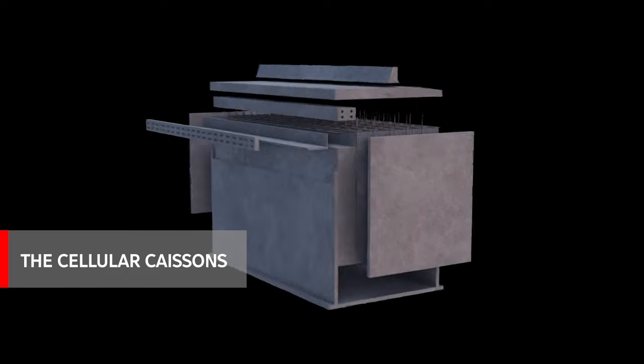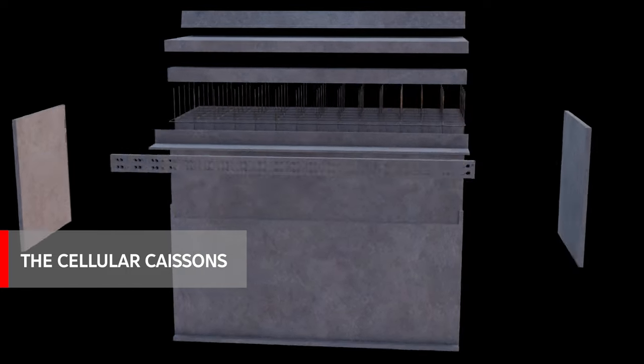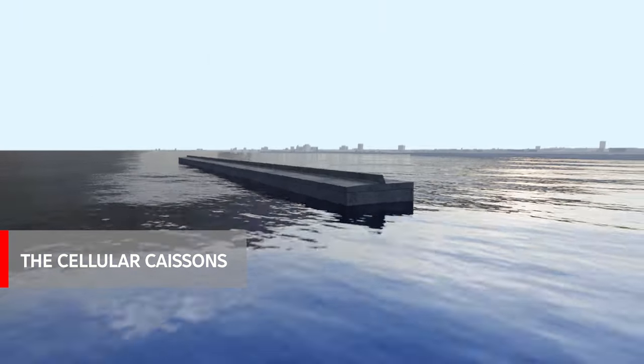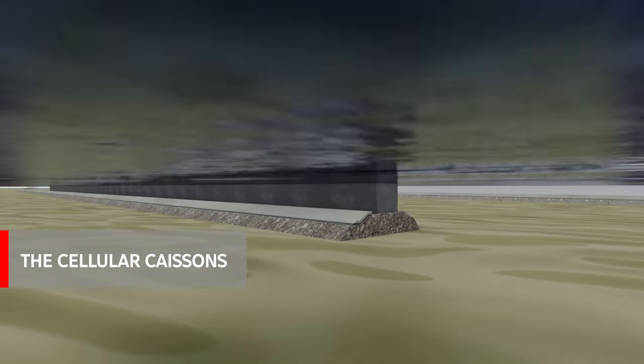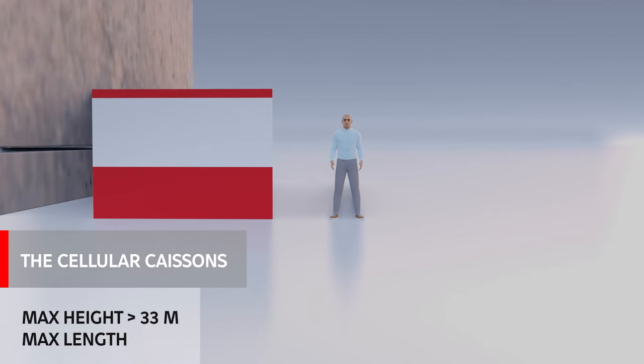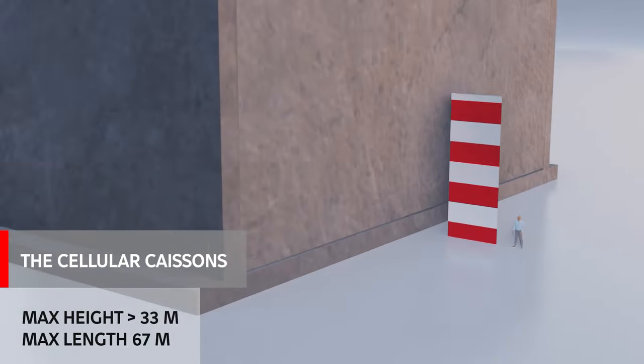The cellular caissons placed on top of the rubble mound base are prefabricated structures to resist the wave's action. They represent a semi-submerged wall that exceeds 6 kilometers. The larger ones are taller than 33 meters and approximately 67 meters long.